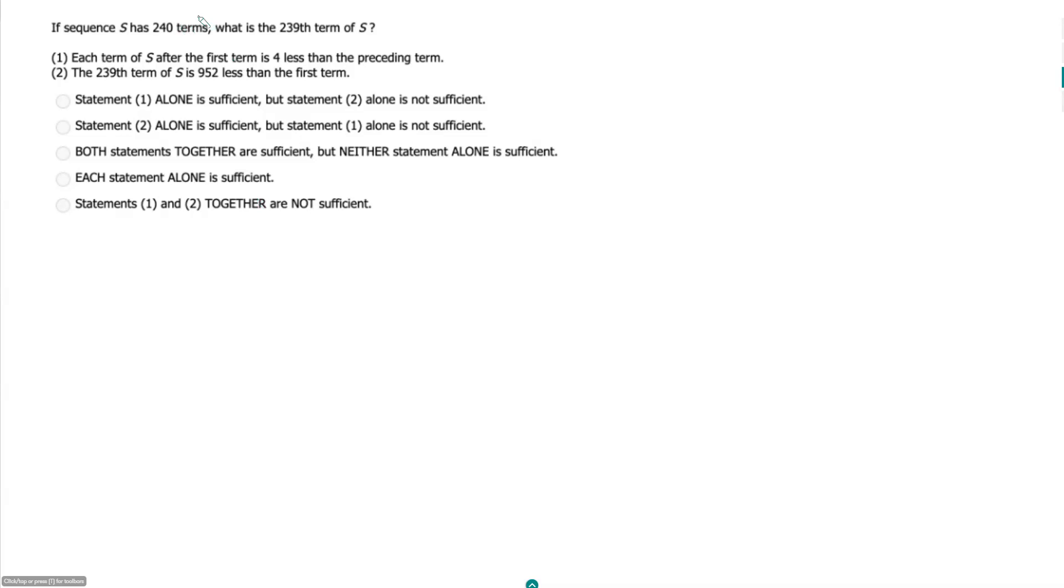If sequence S has 240 terms, what is the 239th term of S? So the second to last term. Okay, but they don't tell us anything about the sequence in terms of the values, so let's look at the statements.